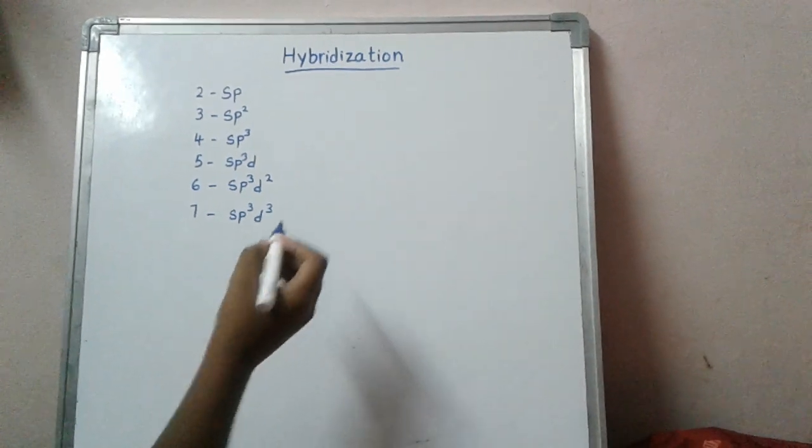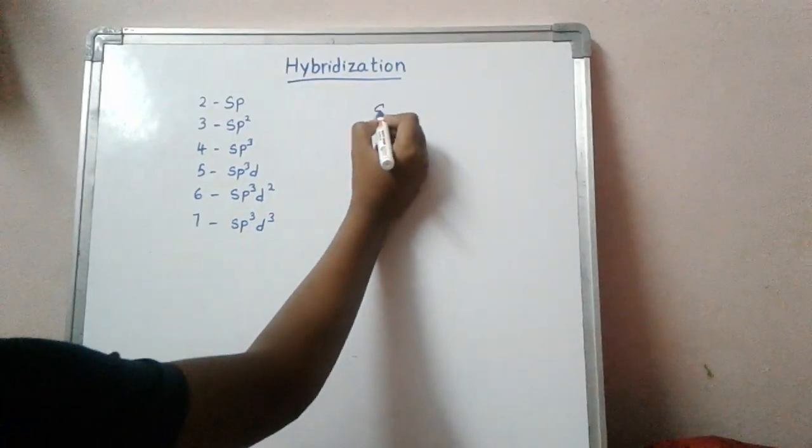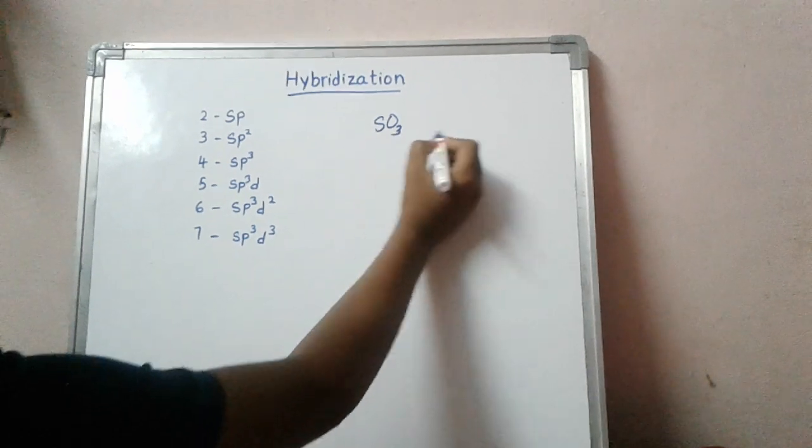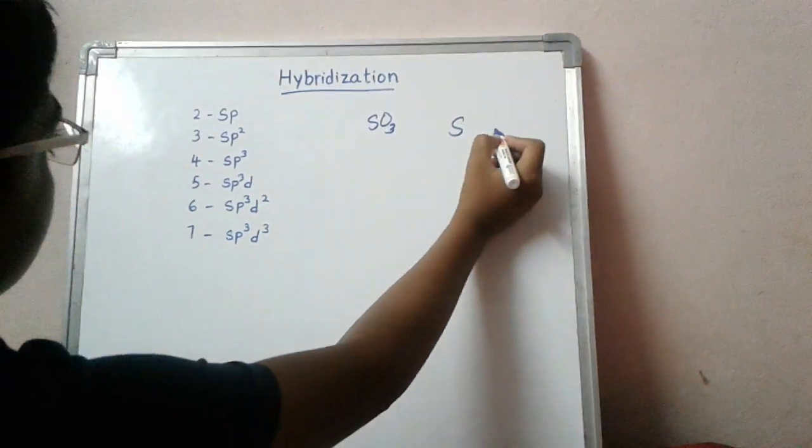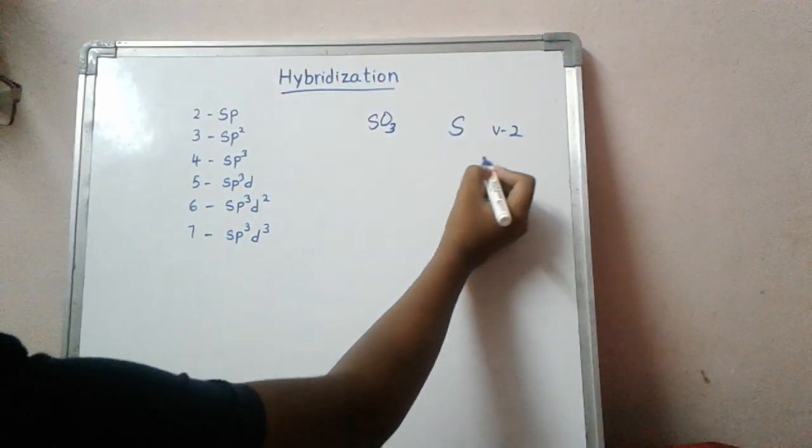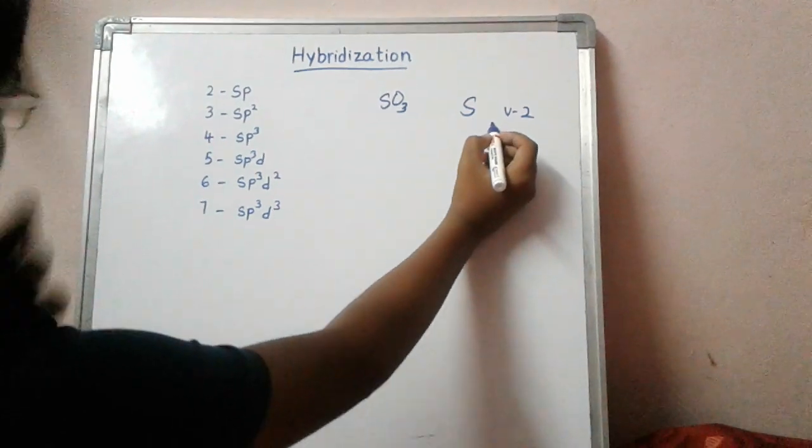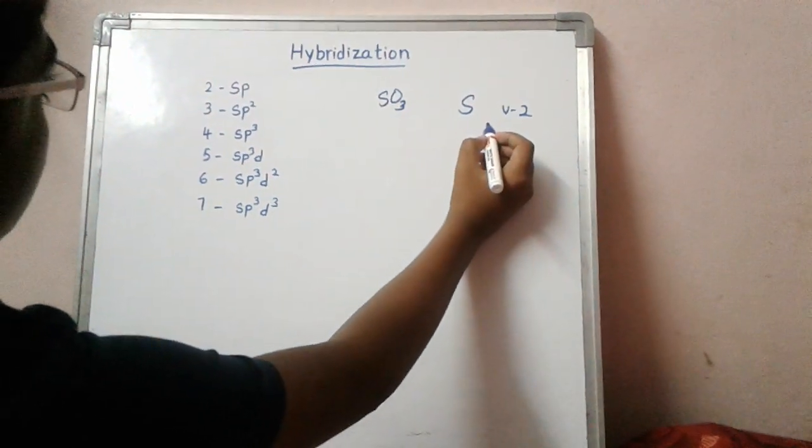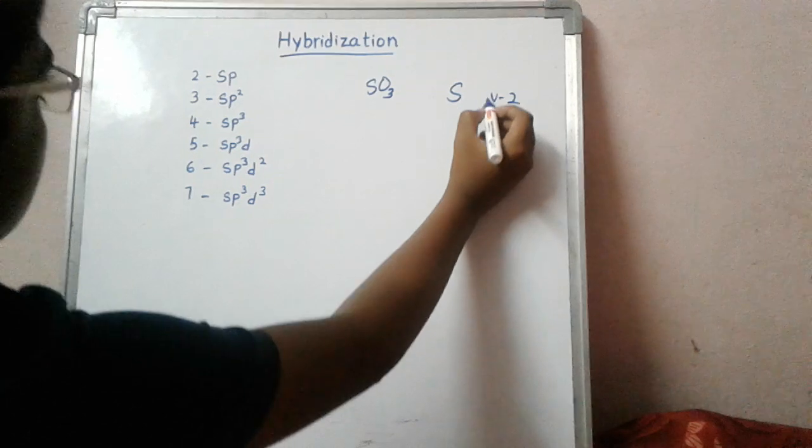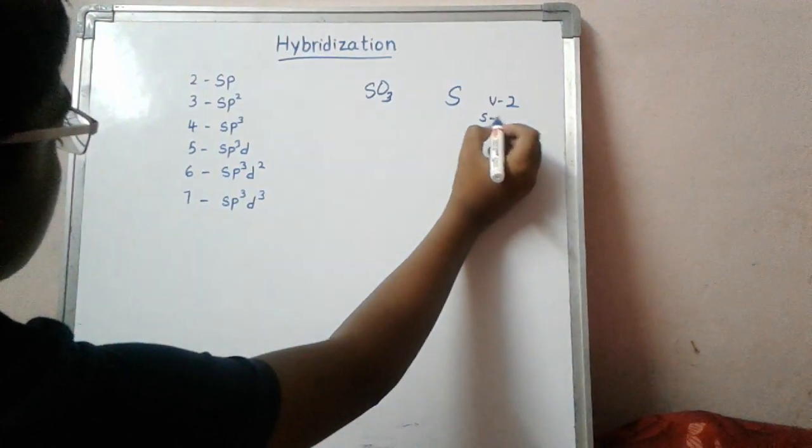For example, if you want to know the hybridization of SO3 molecule, the central atom is S. Its valence is 2 and the number of valence electrons are 6.